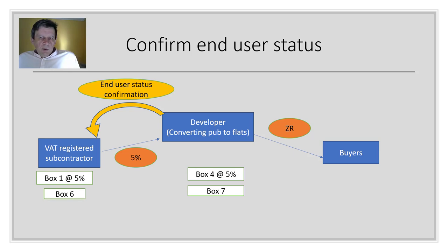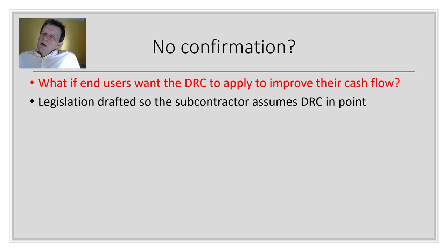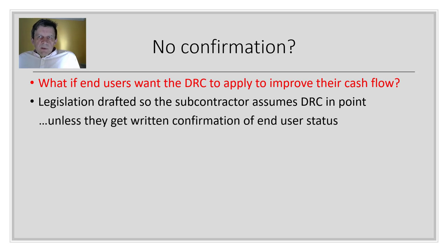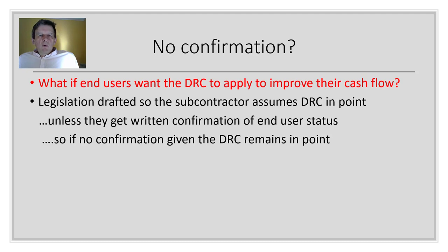Some developers may decide not to confirm end user status. The legislation is drafted so that the subcontractor assumes the DRC applies unless they receive written confirmation of end user status — there is no obligation on the end user to issue that confirmation. So if no confirmation is given, the DRC remains in point. HMRC want the DRC to apply as broadly as possible to prevent subcontractors charging VAT, so the legislation defaults to DRC applying across the board.